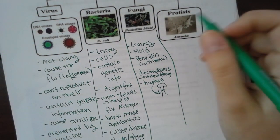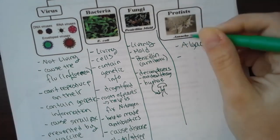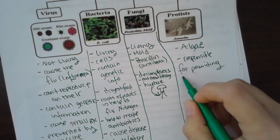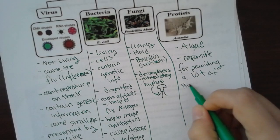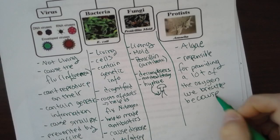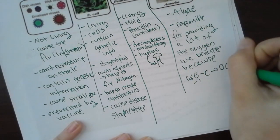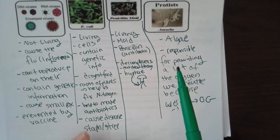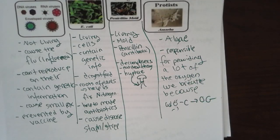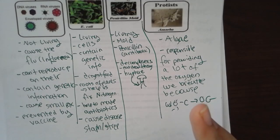Protists — an amoeba would be an example, and also algae. Algae is responsible for providing a lot of the oxygen that we breathe because it can photosynthesize — your favorite formula. Most of the first plants evolved from algae. Algae is also sometimes used to combat climate change, because with deforestation we're putting a lot of carbon dioxide into the air and there's less oxygen from cutting down plants. So sometimes they'll re-infuse environments with algae to try to help that balance. It's not enough at this point, but it's something to try.